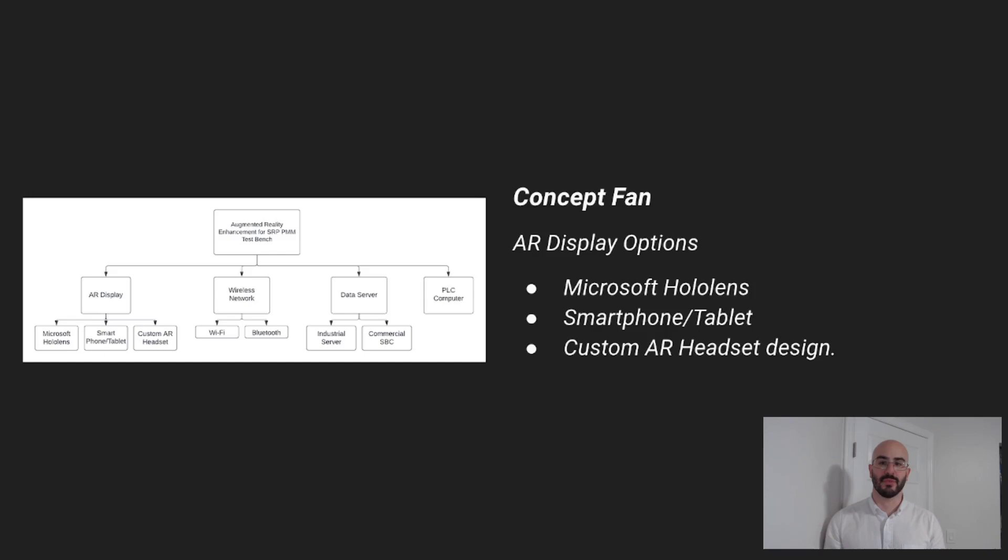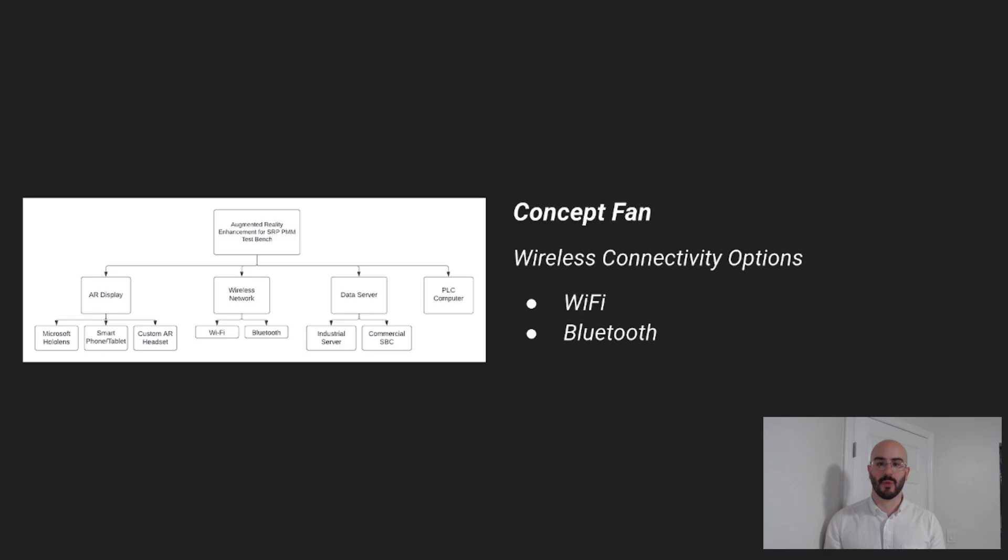In terms of wireless connectivity, we decided to go with Wi-Fi. Wi-Fi provides better network speeds and the scalability of adding multiple different devices to the network. For the server, we have the option of an industrial server or a single board computer. The industrial server will provide much more computing power and reliability but comes at a higher price than the single board computer.